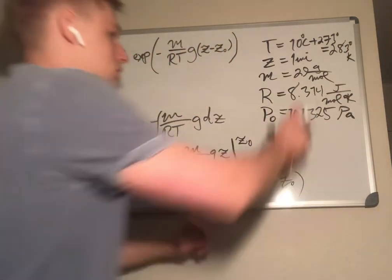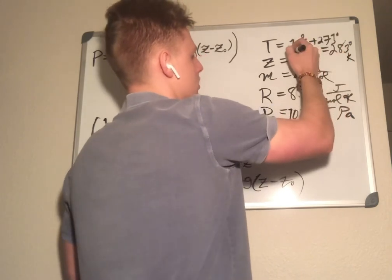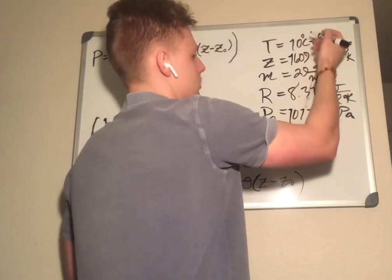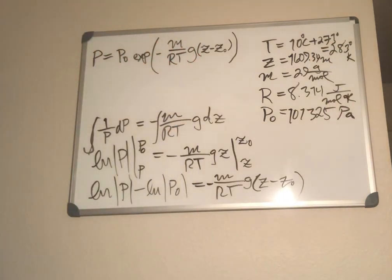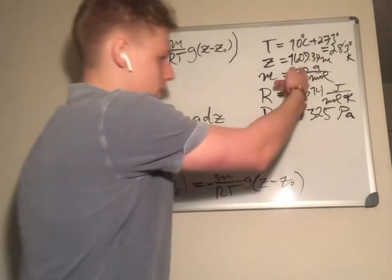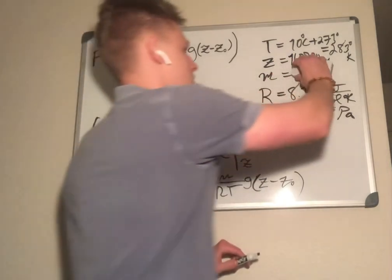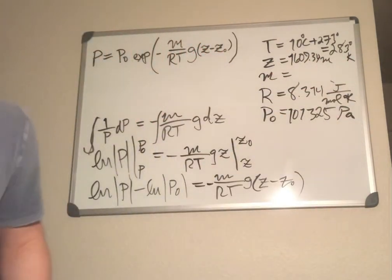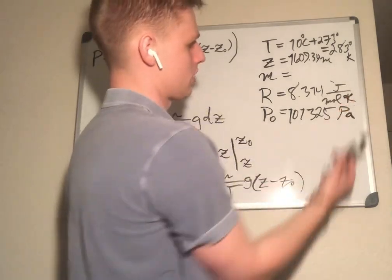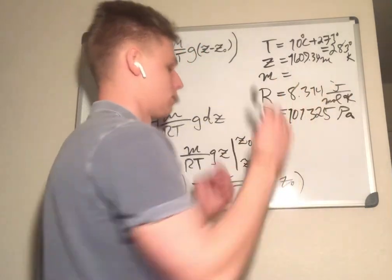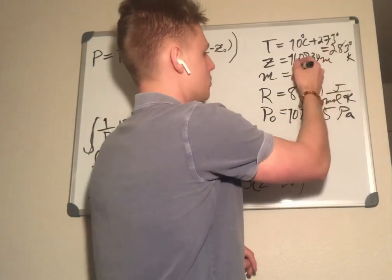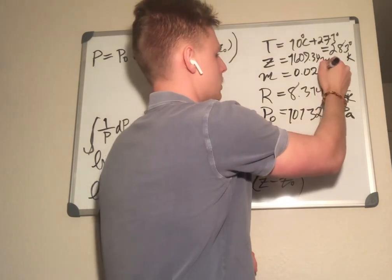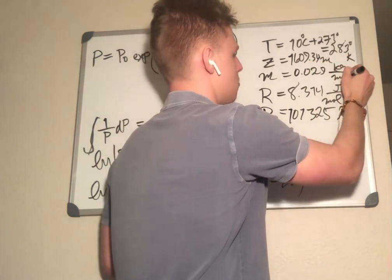One mile is 1,609.34 meters. And grams - we're not going to use grams. We're going to turn that into kilograms because joules are built off of kilograms. So 0.029 kilograms per mole.